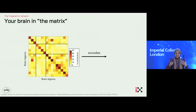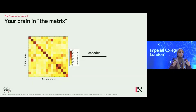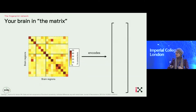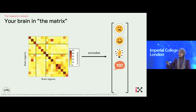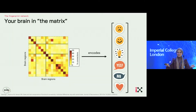And if we can understand, map, and represent this matrix, we learn how to predict different brain states. For example, we can learn to predict if you're happy or sad, maybe inspired, or maybe this is a neural fingerprint of your decision making. We can also eavesdrop on your love life — so it's all possible with brain networks.